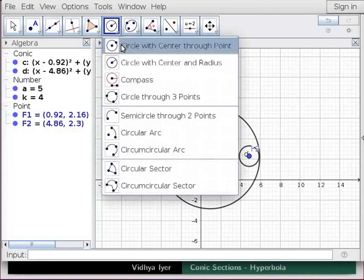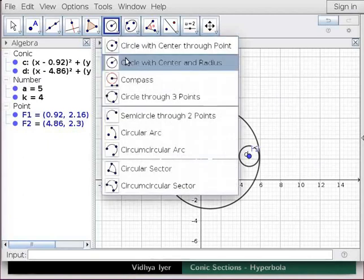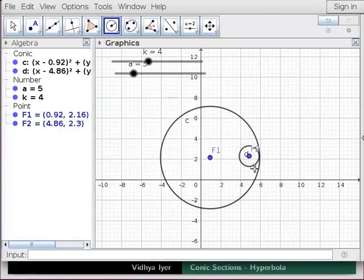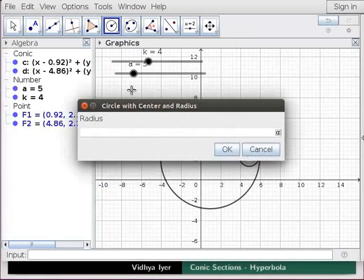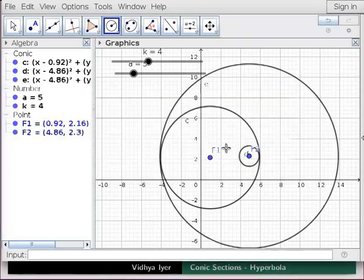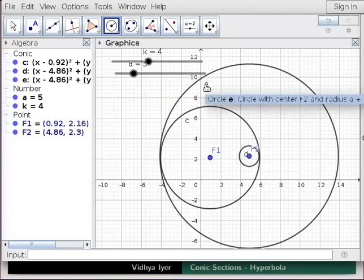Click again on Circle with Center and Radius Tool and click on F2. In the text box, type A plus K and click OK. Circle E with Center F2 and Radius A plus K appears.